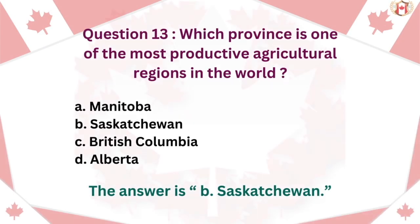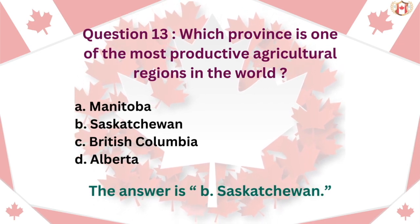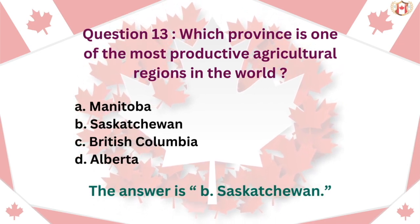Question 13: Which province is one of the most productive agricultural regions in the world? A. Manitoba, B. Saskatchewan, C. British Columbia, D. Alberta. The answer is B. Saskatchewan.